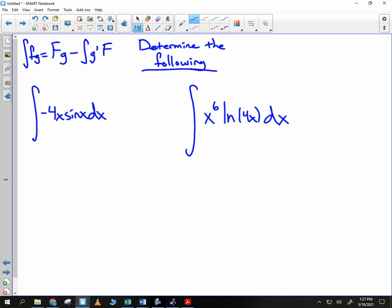So we have integral of negative 4x sine of x dx. What is F? What is g? Good. So I have big F, the antiderivative of sine, is negative cosine, times negative 4x. So it would be a positive 4x cosine. So that's what we start with.